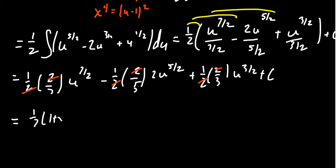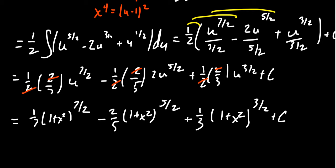Next, we're going to get -2/5(1+x²)^(5/2). And then finally, we are going to get a plus 1/3 times (1+x²)^(3/2) plus an arbitrary constant. And this, of course, gives us the anti-derivative we were looking for.